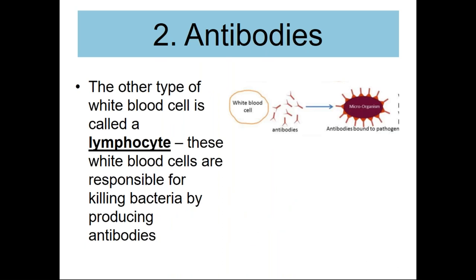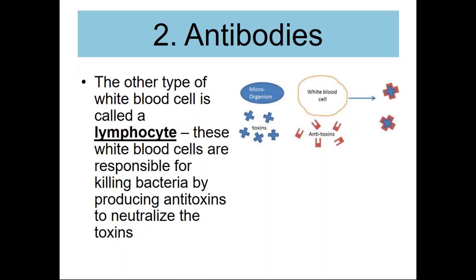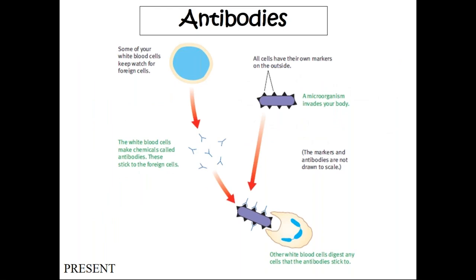In the case of antibodies, there are lymphocytes responsible for the production of antibodies to protect your body. These white blood cells kill bacteria by producing antibodies, and they can also produce antitoxins to neutralize the toxins released. Some white blood cells watch for foreign cells and make chemicals called antibodies, which stick to foreign cells. All microorganisms have their own markers on the outside called antigens. Antibodies stick to the outer part of these microorganisms, allowing other white blood cells to identify and engulf them.